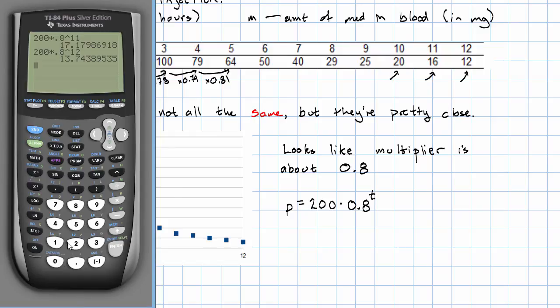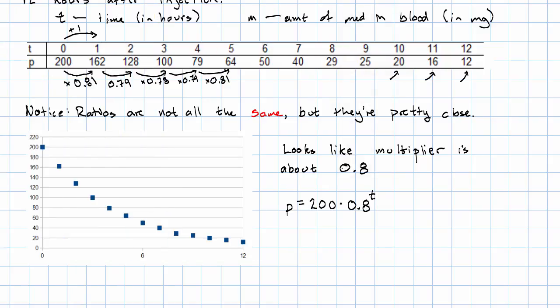These are both a little bit too low. Let's look at this one. This one's a little too low also. Maybe my multiplier should be a little bit less than 0.8. But that gave me a pretty good approximation.